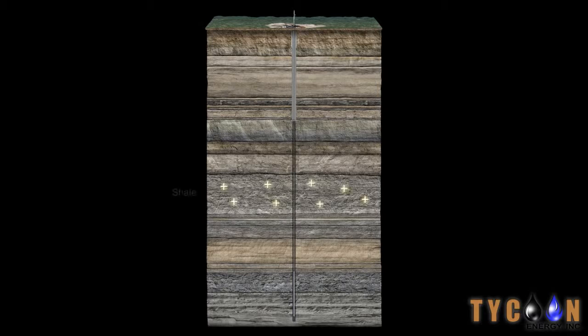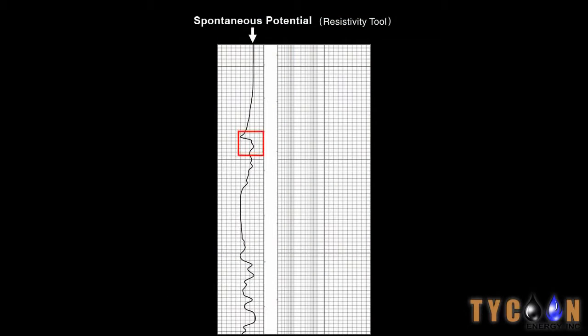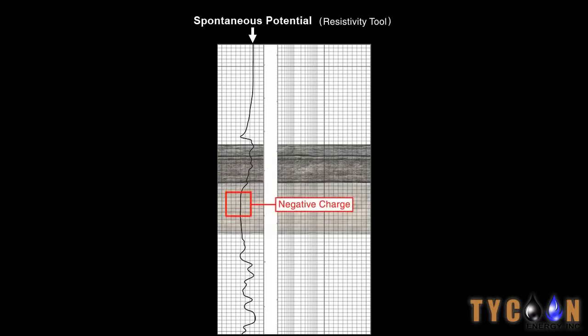Some layers of rock have a positive charge compared to the surface, while others have a negative charge. A shift to the right on the log indicates a positive charge, usually associated with shale. A shift to the left indicates a negative difference, usually associated with sandstone.